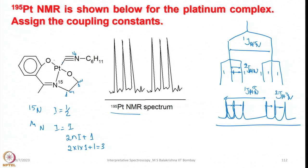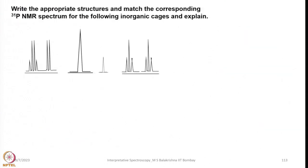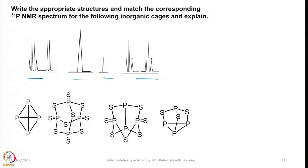This is a typical 195 platinum NMR spectrum involving both 1J(Pt-15N) coupling as well as 2-bond Pt-14N coupling. Normally we do not see 14N coupling, but if we get something like this, interpretation is rather easy. Now I have given a set of spectra and you need to write the appropriate structures and match the corresponding 31P NMR spectrum for the following inorganic cages. Four spectra are given for four molecules. For P4, it is a tetrahedral molecule with all phosphorus atoms identical — chemically and magnetically equivalent — so one should expect a single resonance in its 31P NMR spectrum.